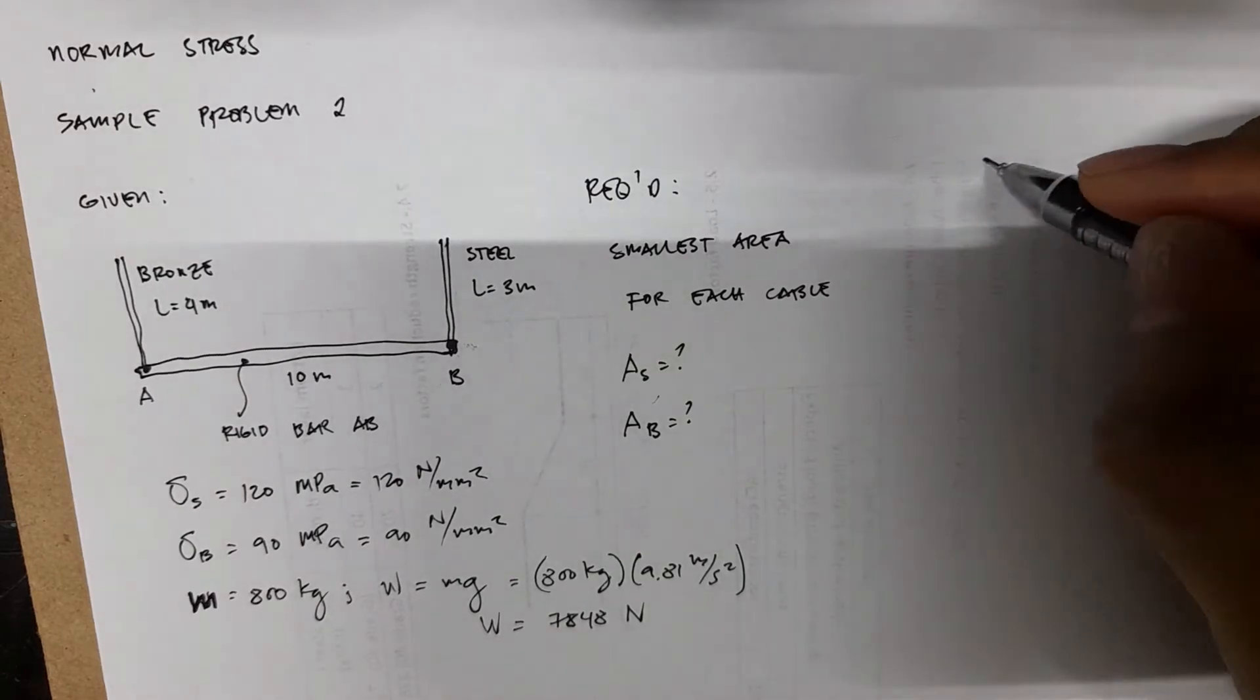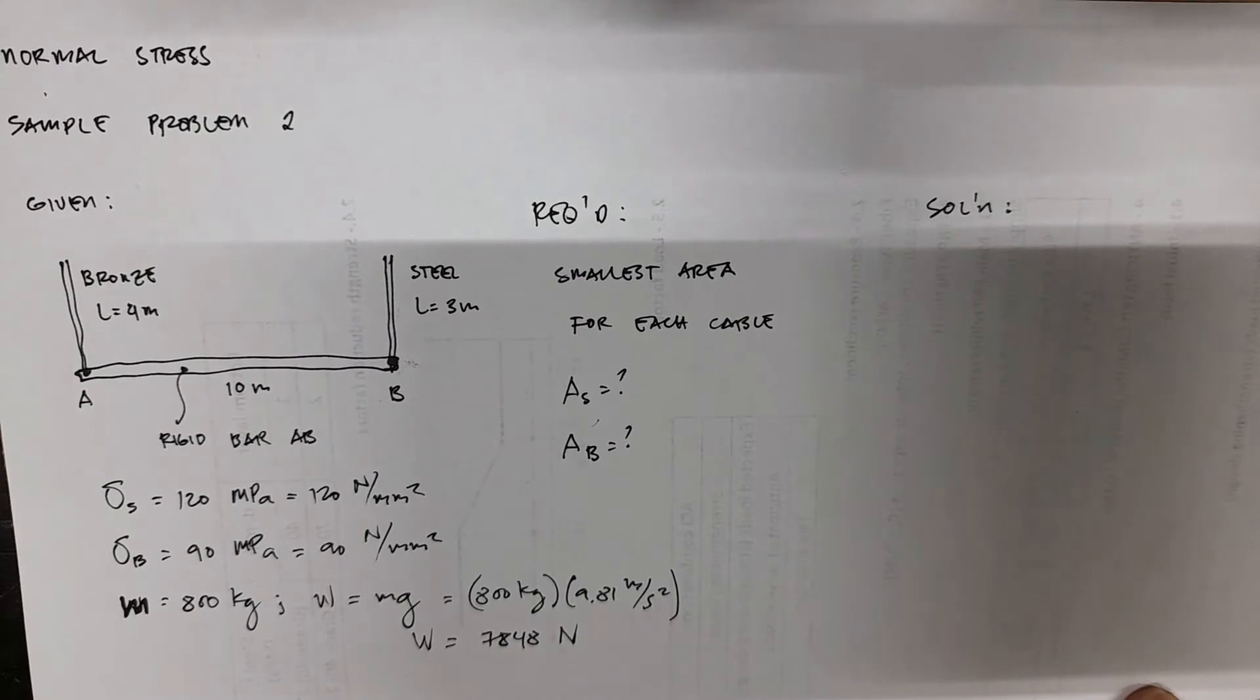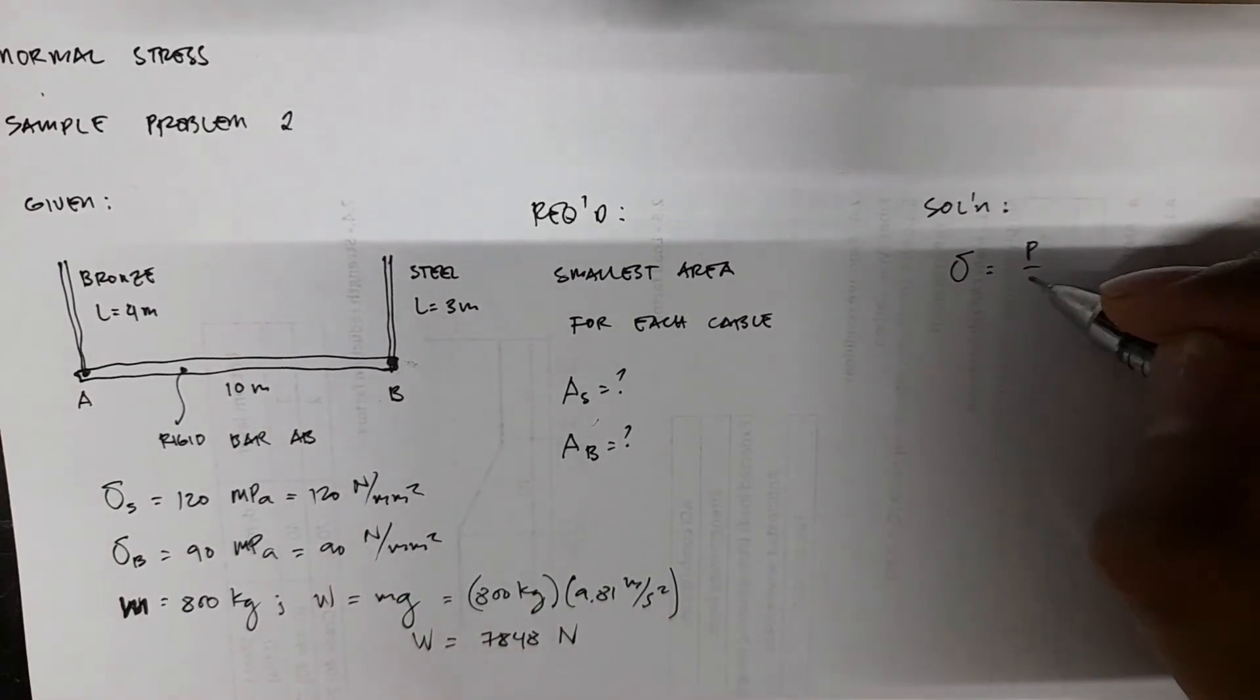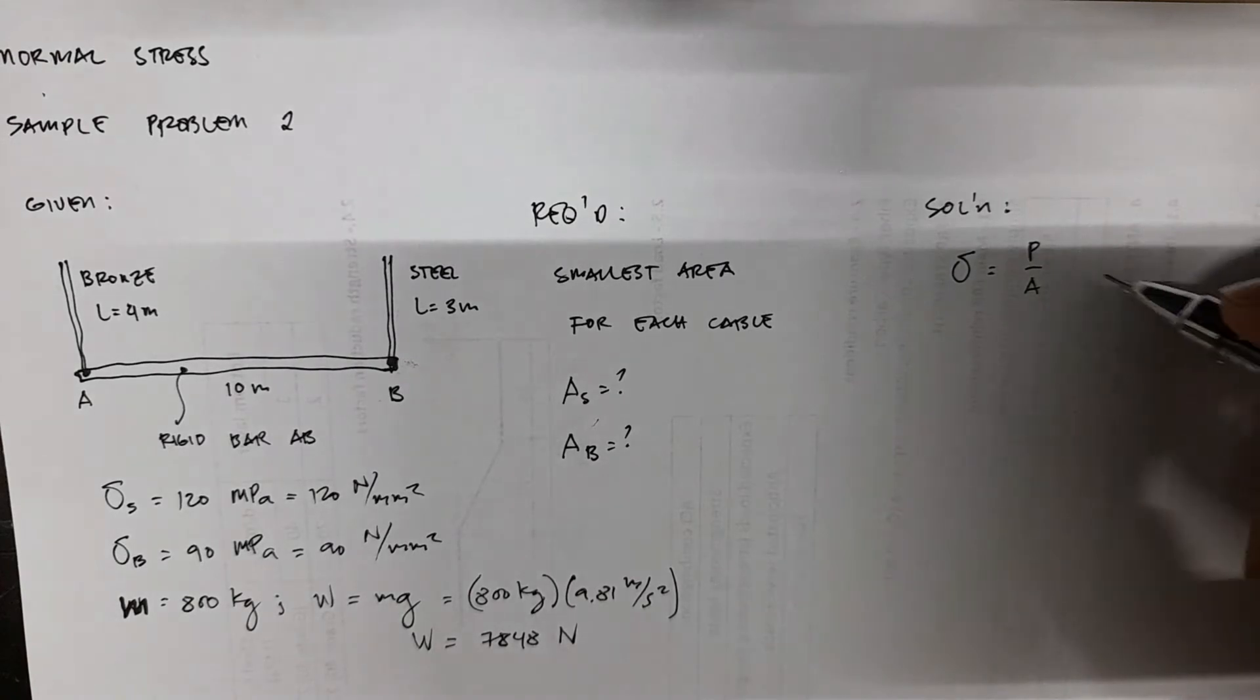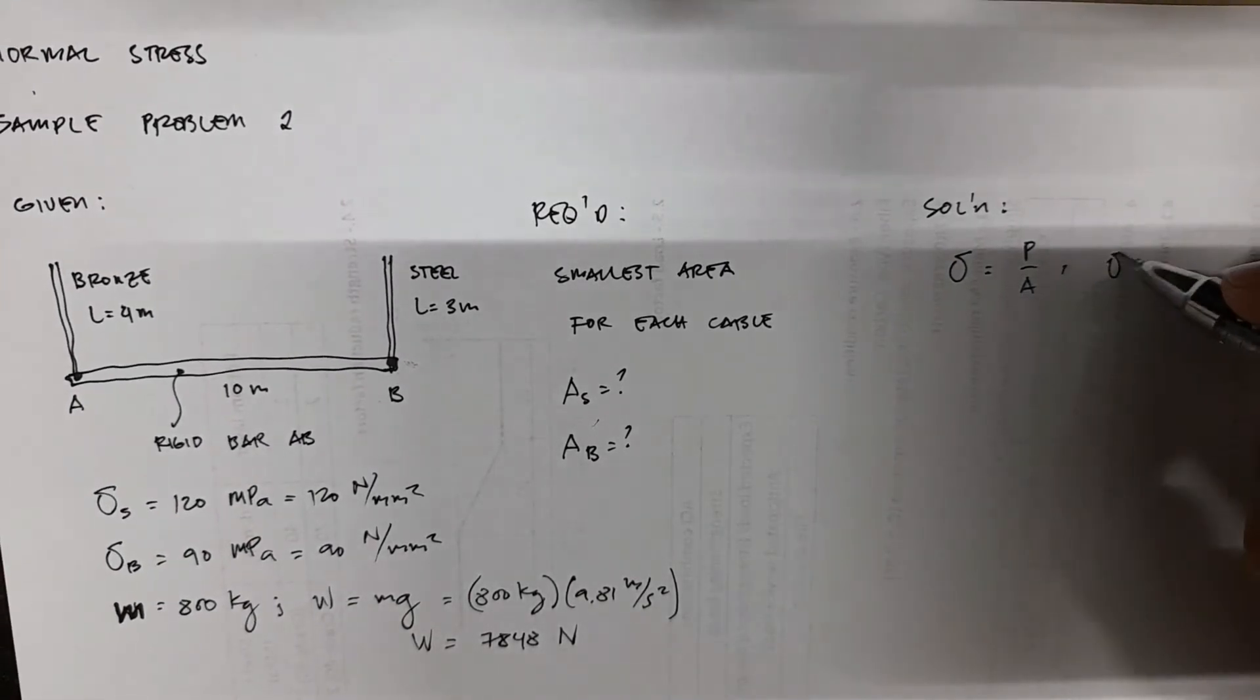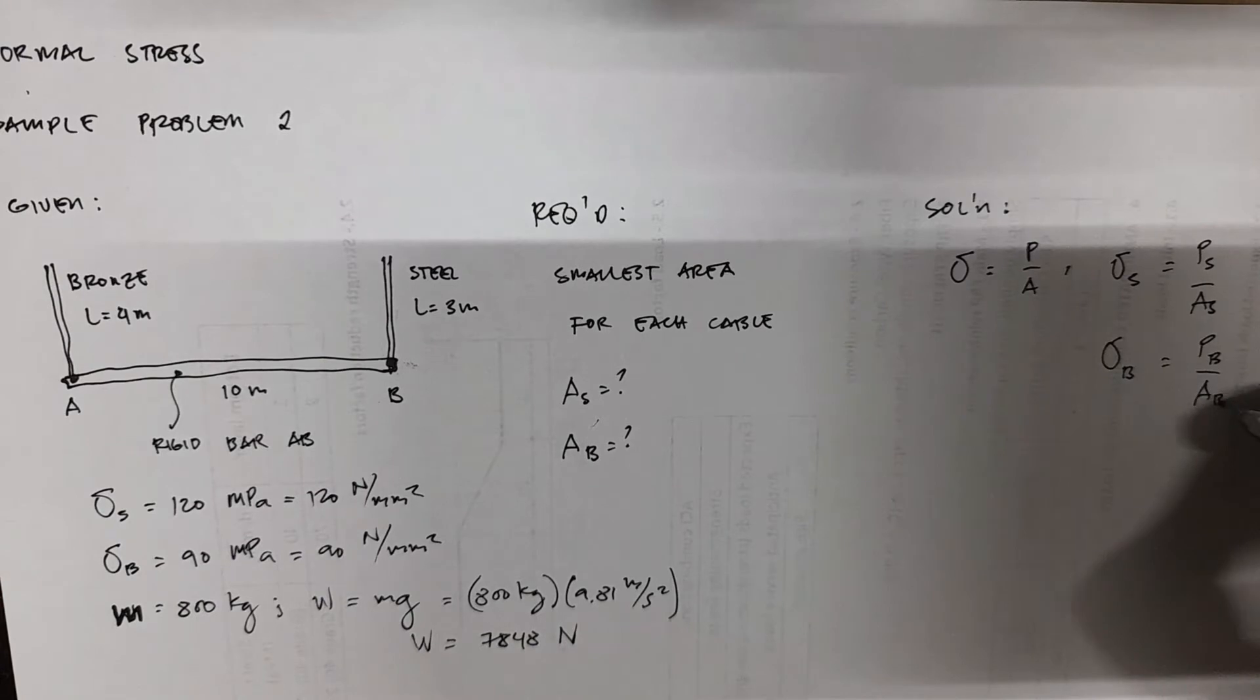So solution - again, we're solving here a normal stress problem. Our working equation is just sigma equals P over A. And we have two cables. So we have for steel, it's just PS over AS. And for bronze, we have sigma B equals PB over AB.